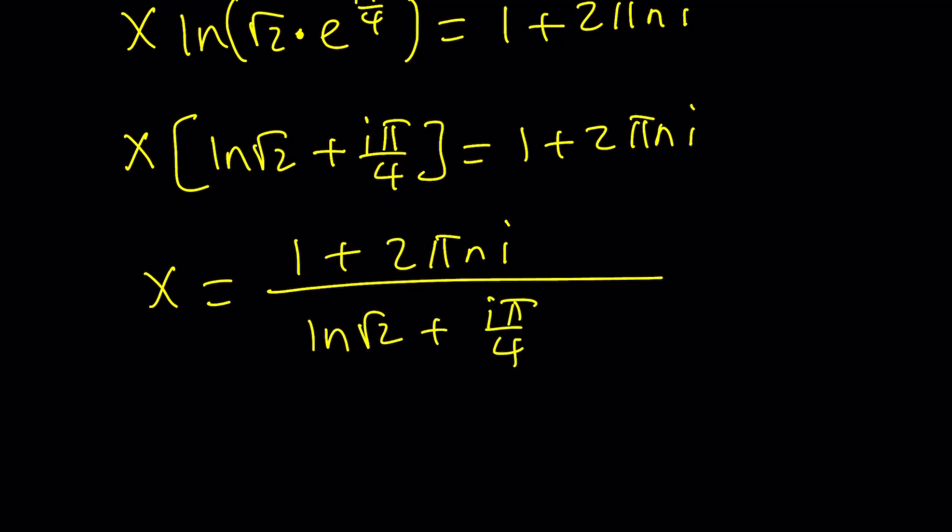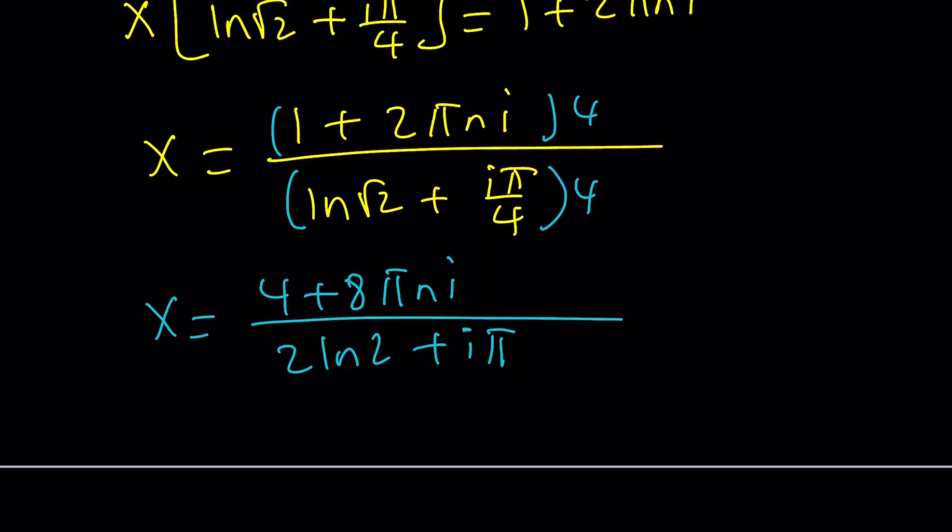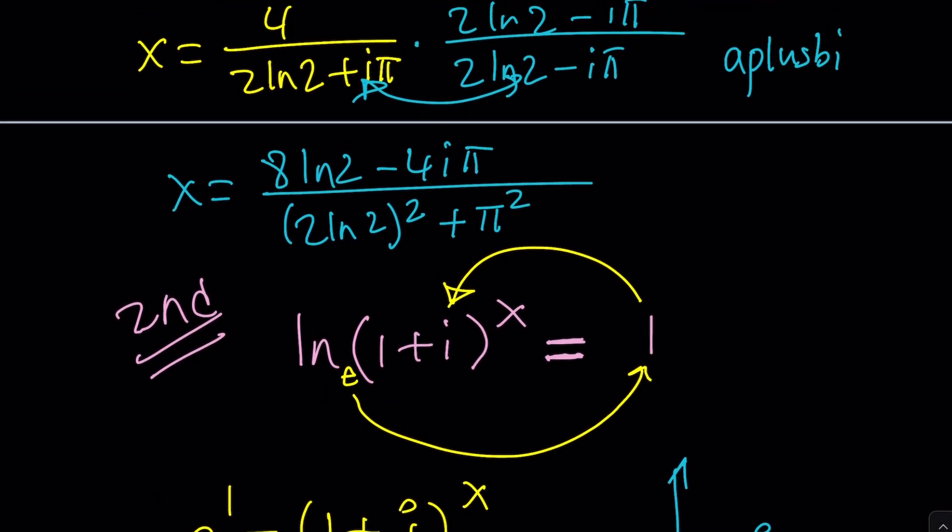Again, like before, let's multiply the top and the bottom by 4 to get rid of the fraction: (4 + 8πni)/(4ln√2). That's going to be turned into 2ln2 plus iπ. And again, as before, if you multiply the top and the bottom by the conjugate, you're going to get the same answer.